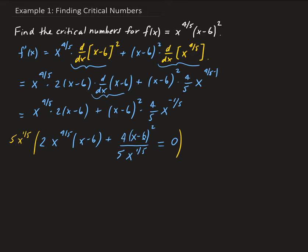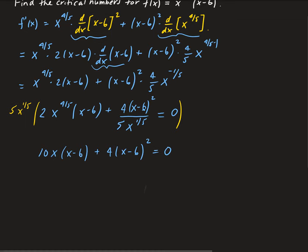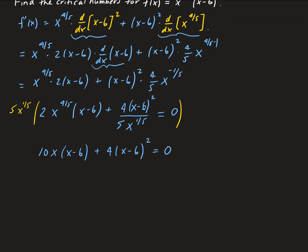Multiplying through: 5 times 2 gives us 10, and x to the one-fifth times x to the four-fifths gives x to the power of 1, so we get 10x times (x minus 6) plus 4 times (x minus 6) squared equals zero. We can factor out (x minus 6) and factor out 2, giving us 2 times (x minus 6) times (5x plus 4 times (x minus 6)).